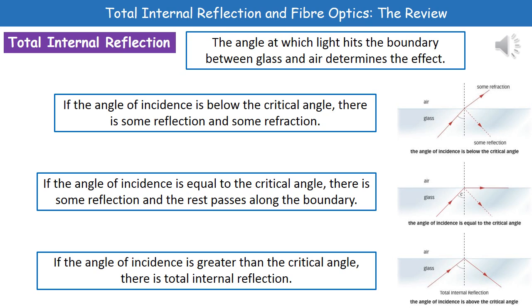The final example is that if the angle of incidence is greater than the critical angle, then we get something called Total Internal Reflection. That just means that all of that light is being reflected back inside the glass, so none of it is actually leaving to go into the air.